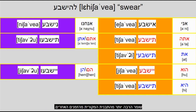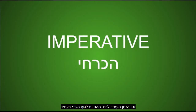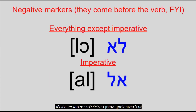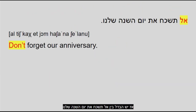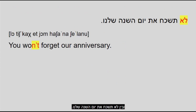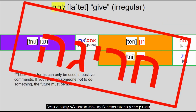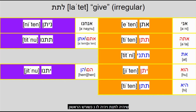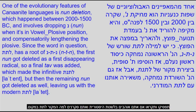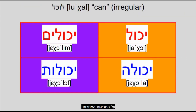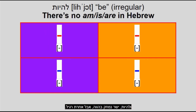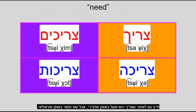The future tense is identified by prefixes. Class 7 retains much more of its infinitive form than in other tenses. The second person future conjugations are also used for most imperatives, although certain common verbs use their older imperative form, like 'lavo' becoming 'bo' and 'latet' becoming 'ten.' Important to note: the negative marker for the imperative is 'al,' not 'lo.' So 'al tishkach et yom hashana shelanu' means 'don't forget our anniversary,' while 'lo tishkach' means 'you won't forget our anniversary.' The verb 'latet' (give) is one of four irregulars — it behaves like a disappearing first-radical verb, with Nun as the first shoresh. 'Yuchal' (can) is also irregular. 'Lichyot' (live) becomes 'chai' in present tense but is otherwise regular. 'Lihyot' (be) is deleted in the present tense but is otherwise regular.